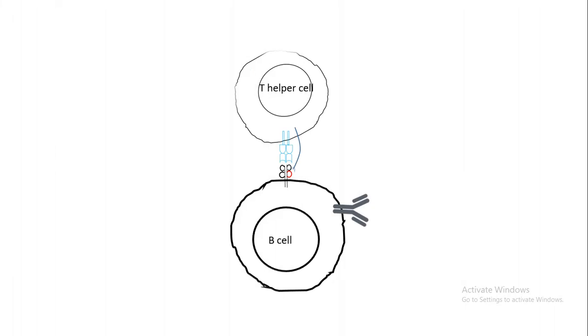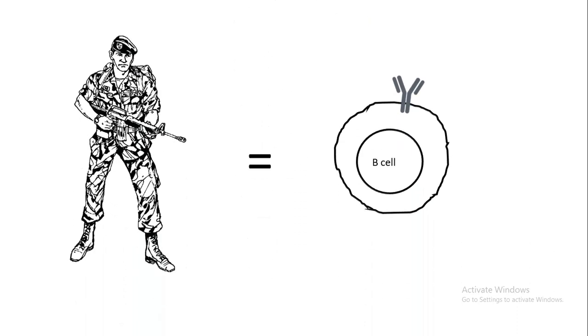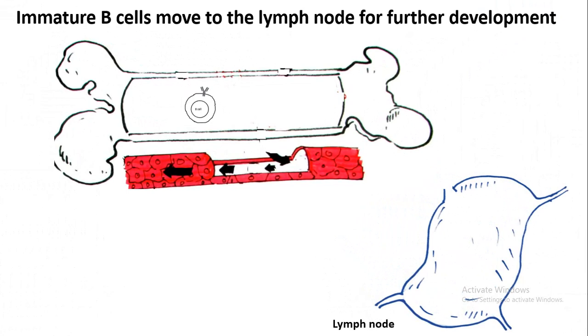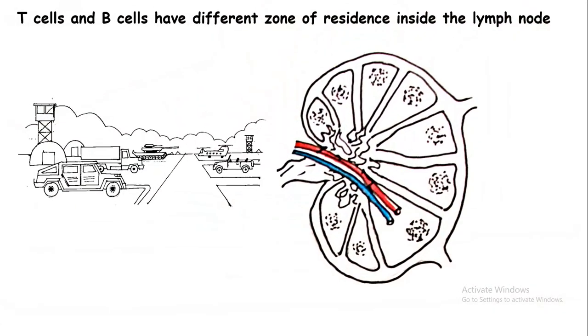B cells are another division of the army. If CD8-positive T cells are land forces, imagine B cells as the navy. B cells develop from the bone marrow. An immature B cell goes to the lymph node. Lymph nodes are like base camps for B cells and T cells. In the lymph node, they reside ready to combat, and they interact with other patrolling police officers—the macrophages and dendrites—to understand what kind of pathogen has invaded our body.